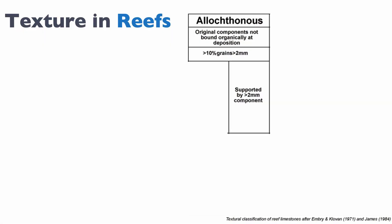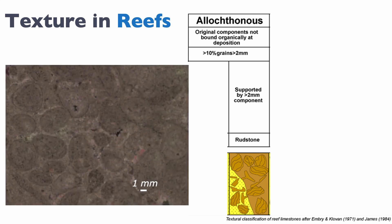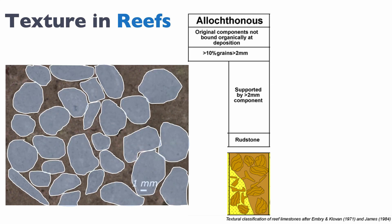If we are supported by the grains larger than 2mm, we're looking at what is known as a rudstone, where the large grains form the framework. Here's an example of a rudstone — these grains form the framework of the rock, and in between these grains we have the smaller matrix, which can either be grainy or muddy.